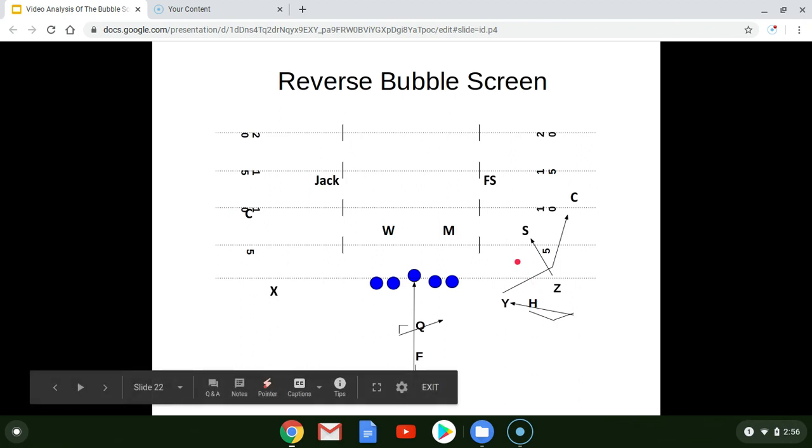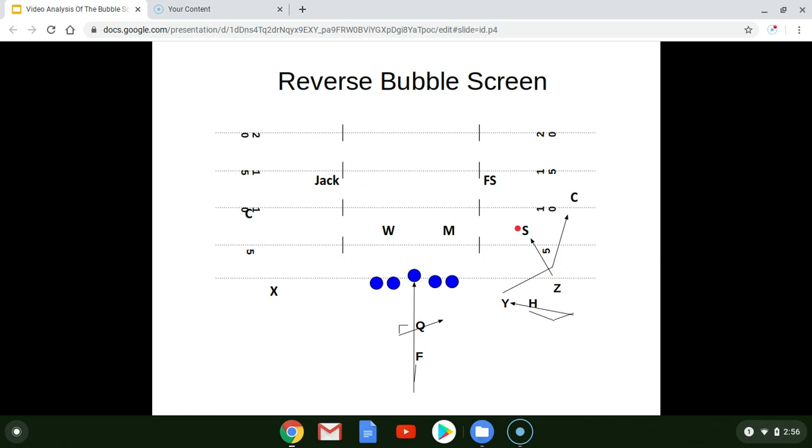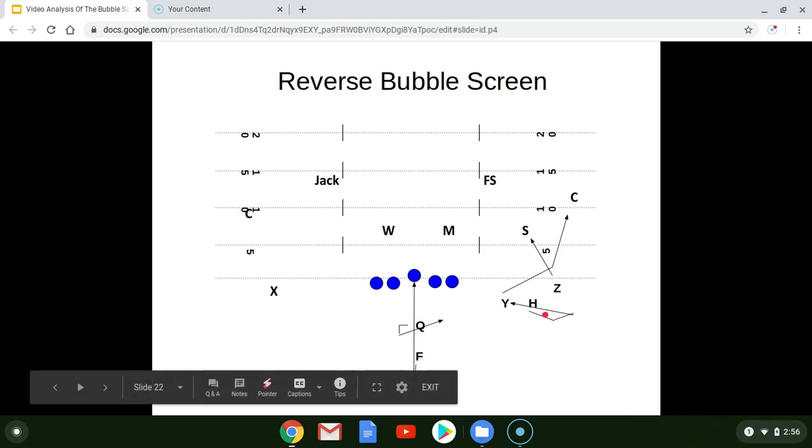Everything looks the same. We're blocking down with the Z receiver onto Sam. We're kicking out with the Y on the corner. And we are running the bubble initially with a three- or four-step bubble route.